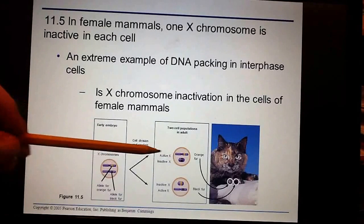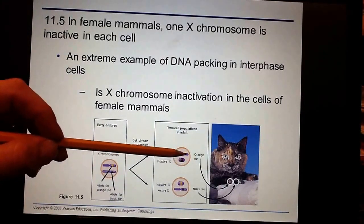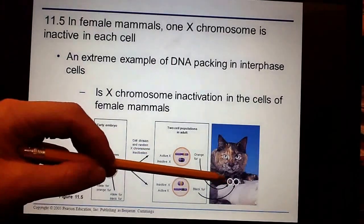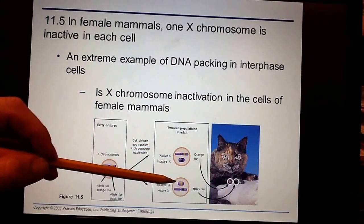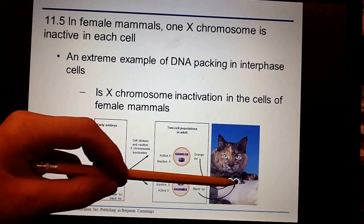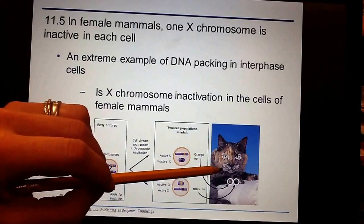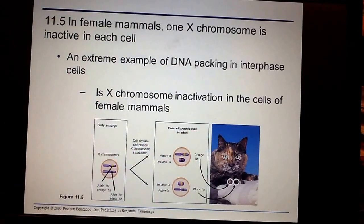Some cells may inactivate the allele, the chromosome that has the allele for the black so that the fur looks orange. In another cell right next to it, it may have randomly selected to inactivate the orange color, and so the black gets expressed. If you look at a calico cat, you'll actually see some hairs are orange and some hairs are black, and it's completely random, and that's because of the way the inactivation happens.